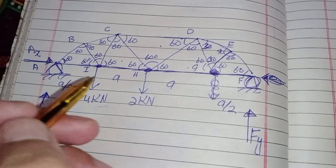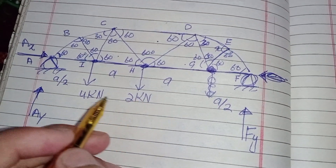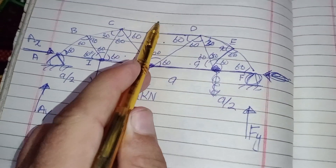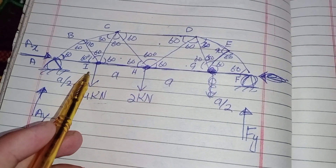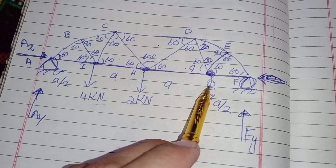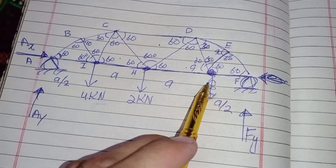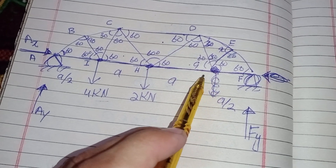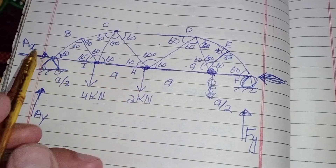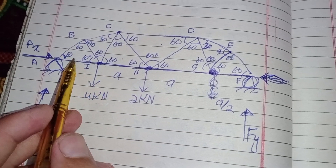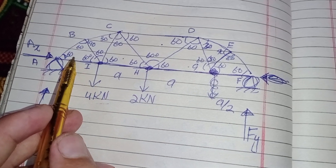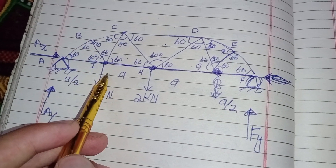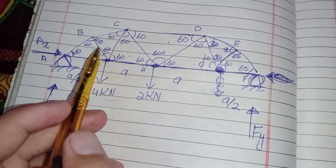This truss is not symmetrical by loading because if you cut it at the midpoint, on the left side there is 4 kilonewtons and on the right side there is no force acting on point G. Therefore this is not symmetrical, so we have to find the forces in BI, CI, and HI.